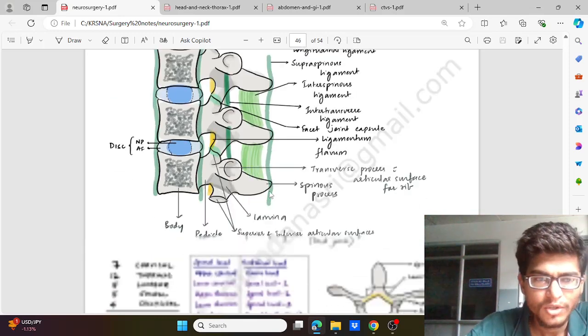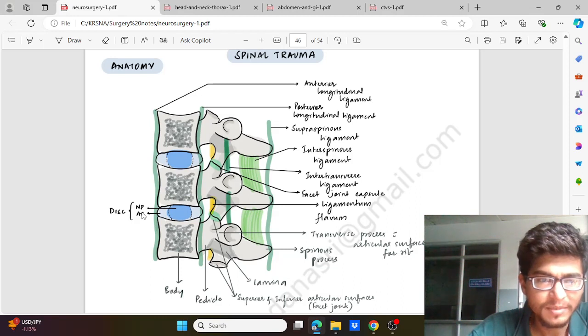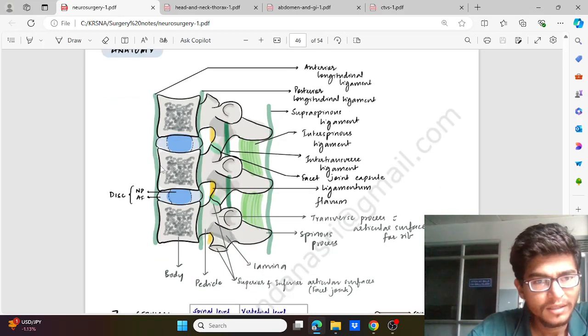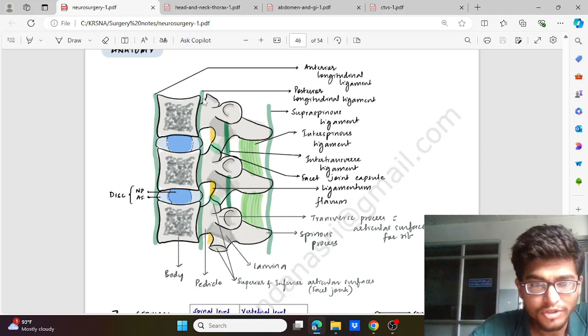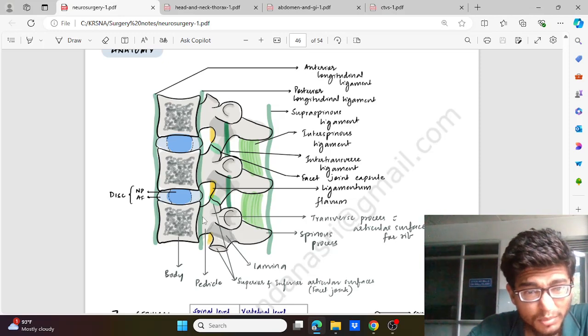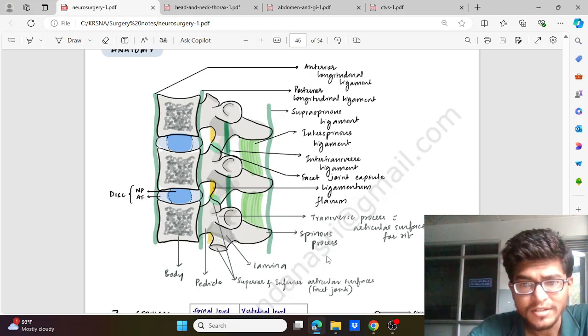So without further delay, let's get started. Before starting, let's quickly see the basic anatomy - the spinal cord, the ligaments, and the vertebras. These are the vertebral bodies. Anterior to the vertebral body is the anterior longitudinal ligament and behind them is the posterior longitudinal ligament. In between the vertebral body is the intervertebral disc which has nucleus pulposus in between. The posterior aspect of the vertebral body is the pedicle, which is attached posteriorly by the spinous process, laterally by the transverse process, and the transverse process has articular surface for the ribs.